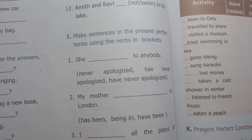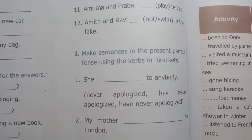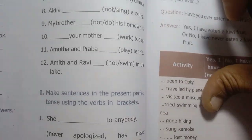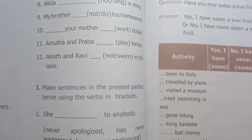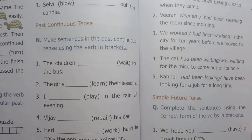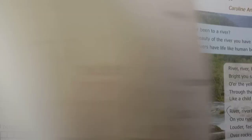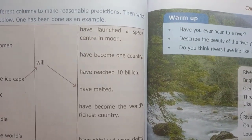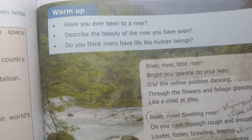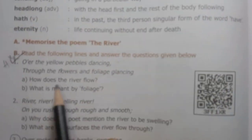If you have answers, you need to prepare yourself — self-evaluation. This is the book-back exercise, the lesson, the prose. Unit 5 Poem: The River — this poem is called — memorize the poem.